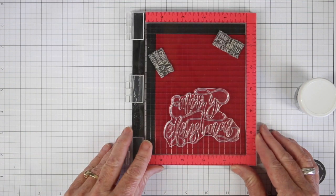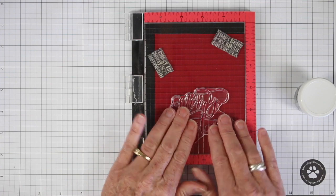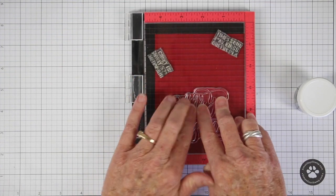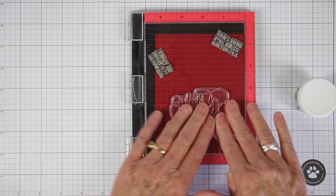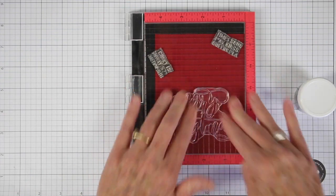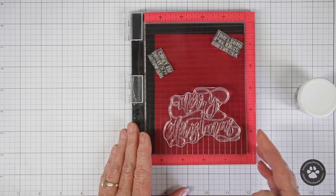Now I have that inked up, and I'm going to close the door on my Misti and press this down in place. I like to use my fingers just to give nice even pressure to make sure I have all the areas of that stamp pressed down.